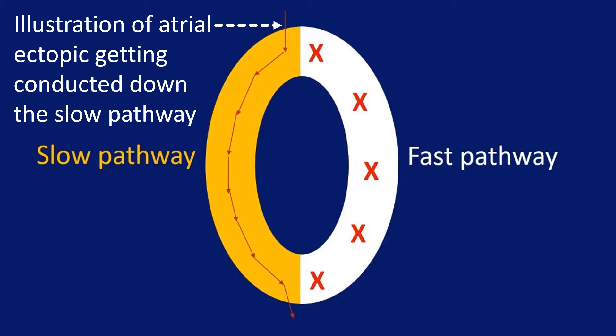When the impulse reaches the lower common pathway of the AV node, it finds that the fast pathway has recovered and gets conducted back into the atrium in addition to the ventricle, producing an AV nodal echo beat. This is the mechanism of reentry in AVNRT.